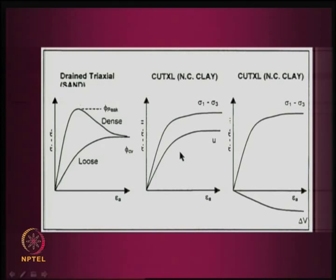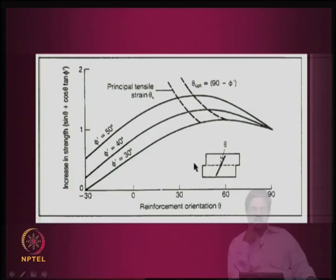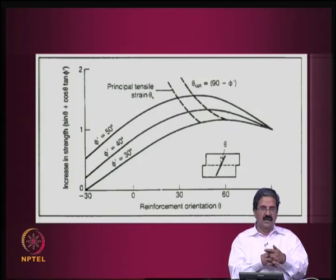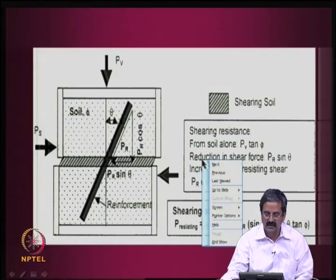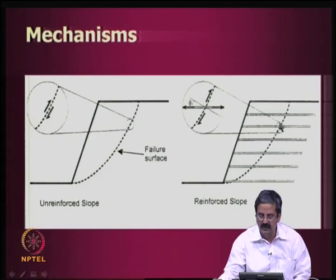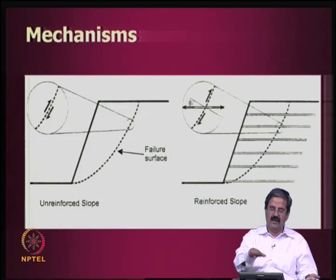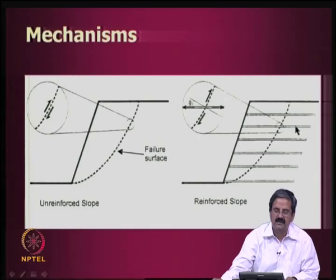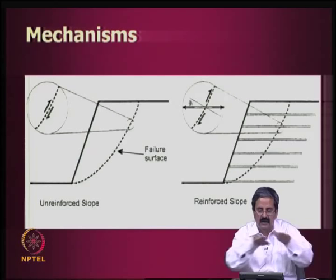Interestingly, when reinforcements are placed horizontally during construction, they naturally intersect the failure surface at roughly 30 to 60 degrees — the optimal range. In the case of a footing, the bearing capacity failure surface is a log spiral; reinforcement placed horizontally also intersects it at roughly 30 to 40 degrees. So in many geotechnical operations, the natural placement angle happens to be in the optimum range.